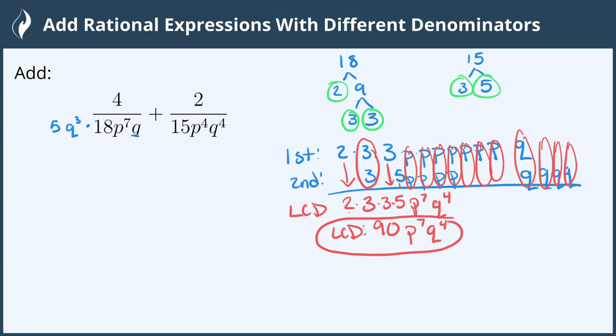Now with our 15 we need to multiply this by 6 to get to 90 and we have 4 of the p's so I need 3 more. So p cubed and we have all of the q's so we're good there.